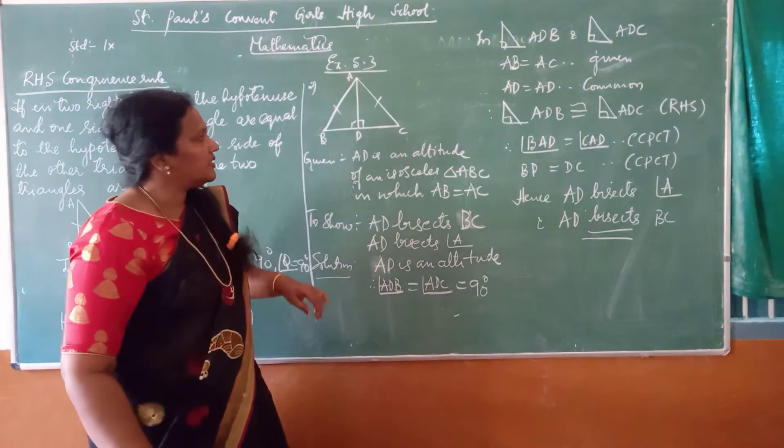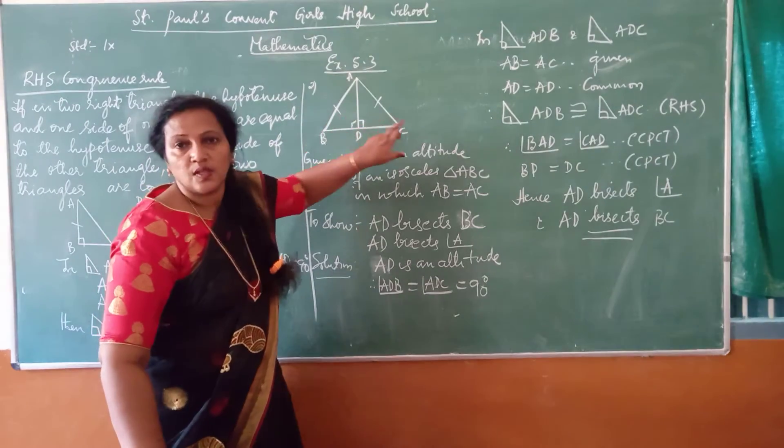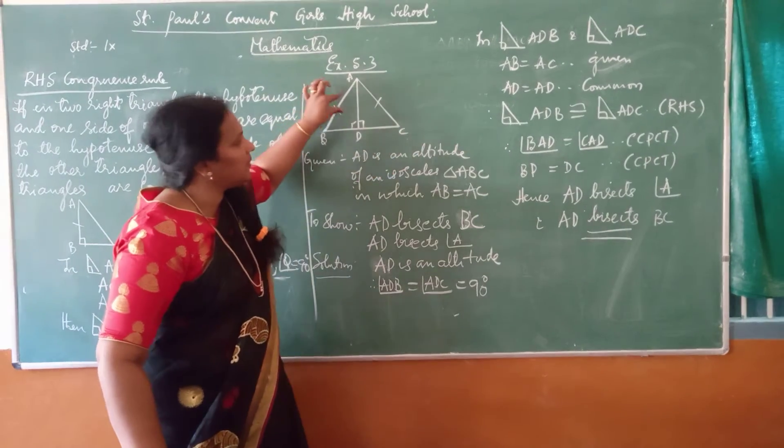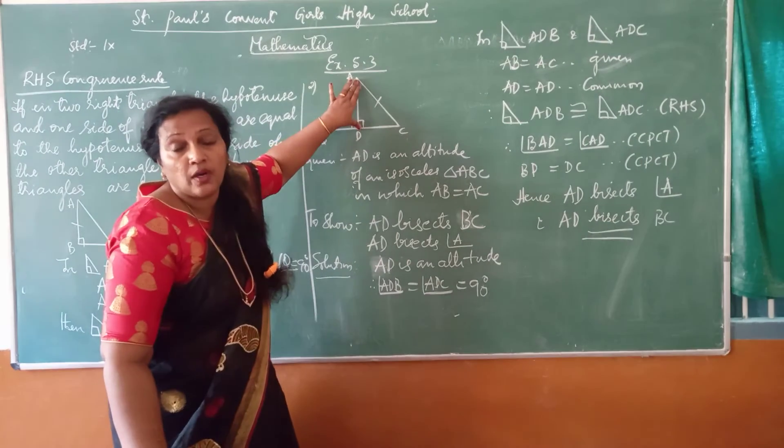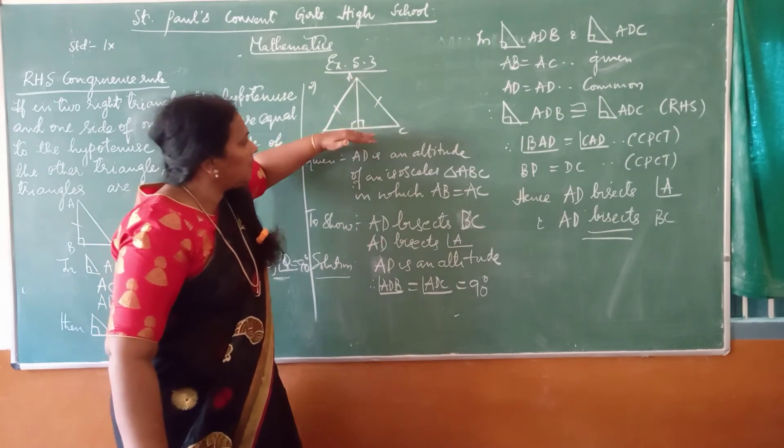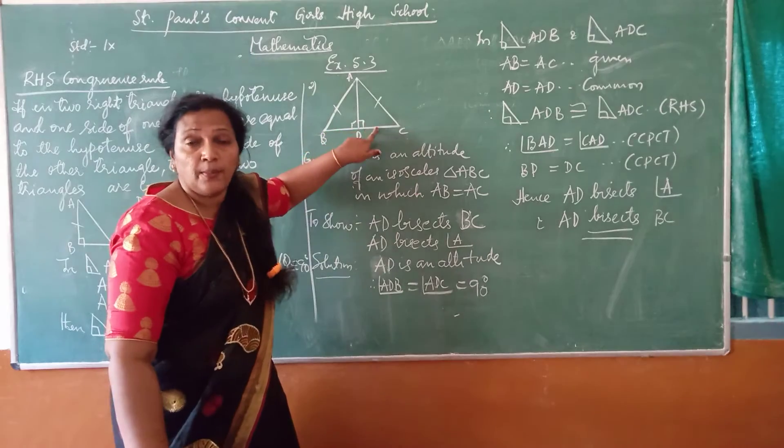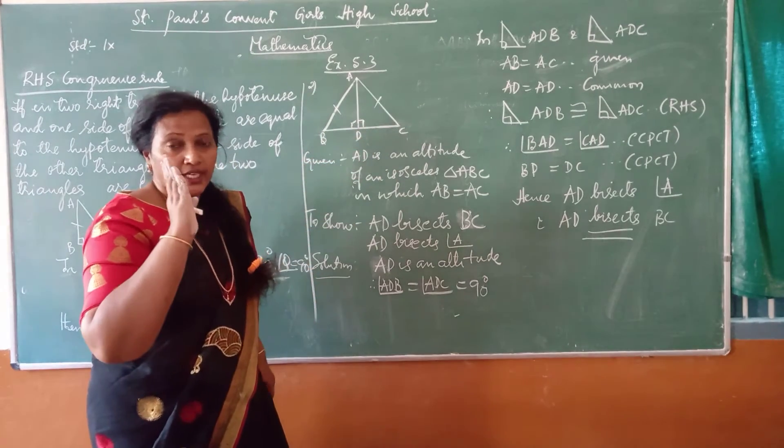What he says is, ABC is an isosceles triangle such that AB is equal to AC. AD is an altitude. Altitude means height. It will be always perpendicular to the base. Altitude, it is the height.